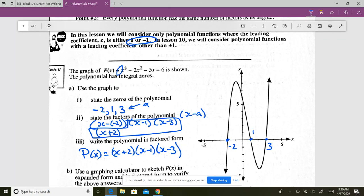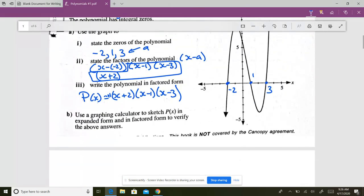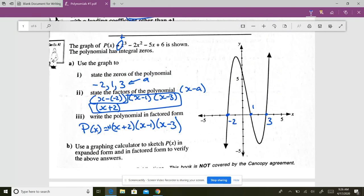And because we know the leading coefficient is plus or minus 1 for all of these, and the reason you know that is because I've told you that, then we write the factored form of this polynomial is x plus 2, x minus 1, x minus 3.